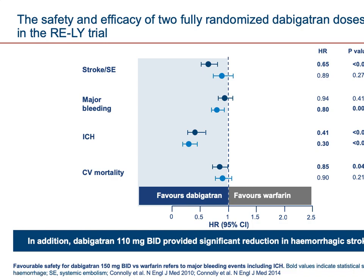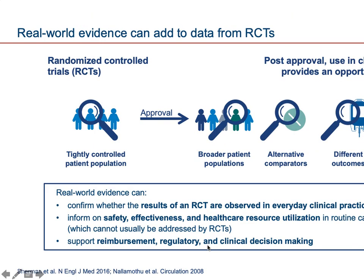Even the lower 110 milligram dose shows significant reduction — not just in hospitalization but also in mortality. Importantly, the 75 milligram dose should always be reserved only for renally compromised patients.